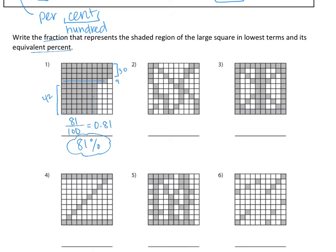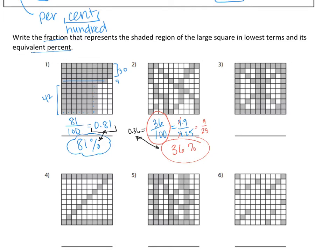Looking at number two, if we count up all of those dots, I'm getting a total of 36 out of the 100, which as a fraction can reduce. This is really 4 times 9 over 4 times 25, so we can reduce this to be 9 twenty-fifths. As a percentage, we needed the out of 100, so thirty-six hundredths is 36%. As a decimal, that's 0.36. A quick way to write a percent as a decimal is to divide by 100, which moves those two decimal places.